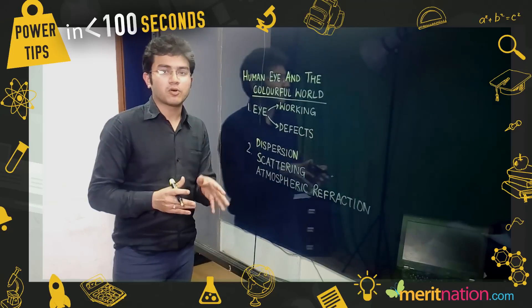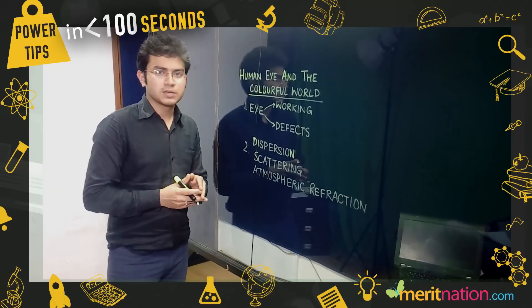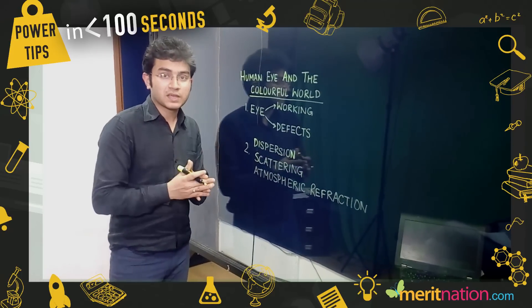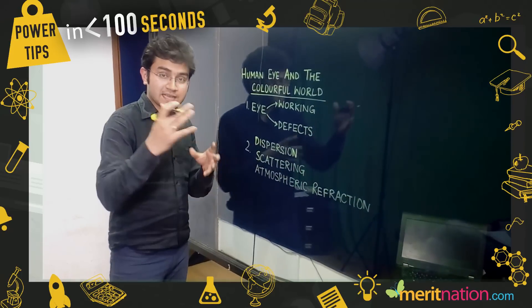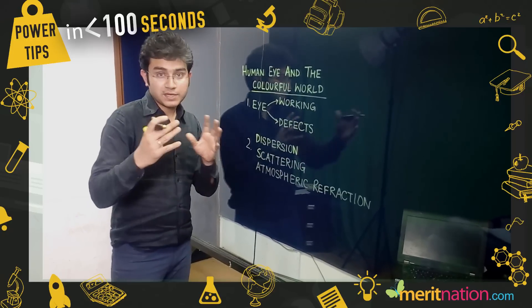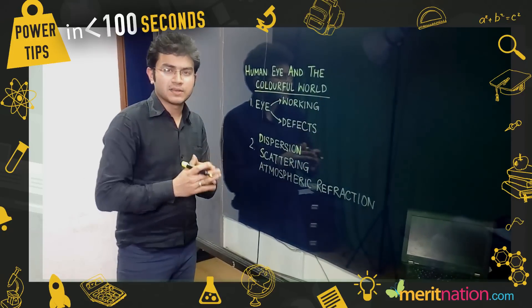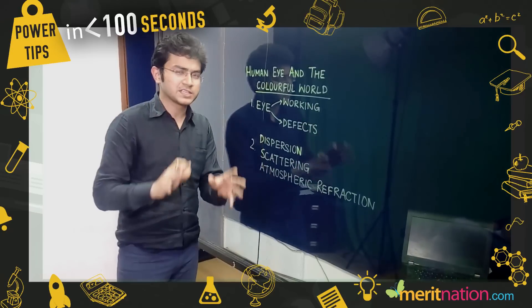The working conceptually is very important. The two important things: one is the power of accommodation of the eye, which is achieved by the ciliary muscles and the crystalline lens, and then you have the ability to change the intensity of light that is entering by iris and pupil. You have to be very clear. You can expect a question on one of these.